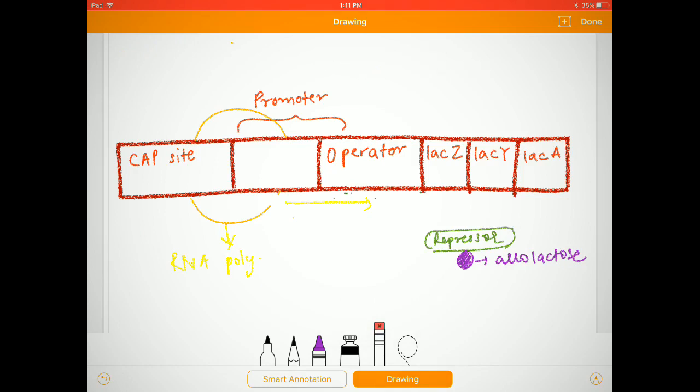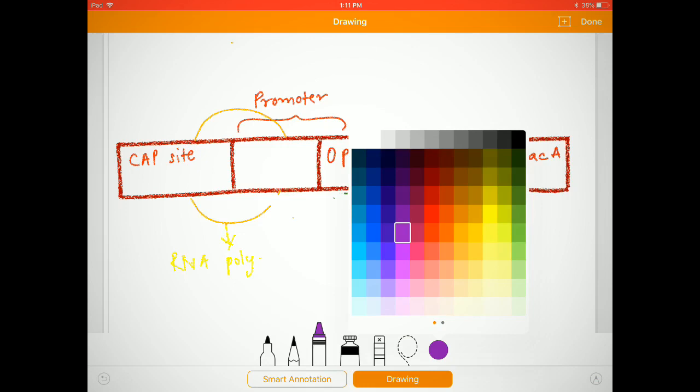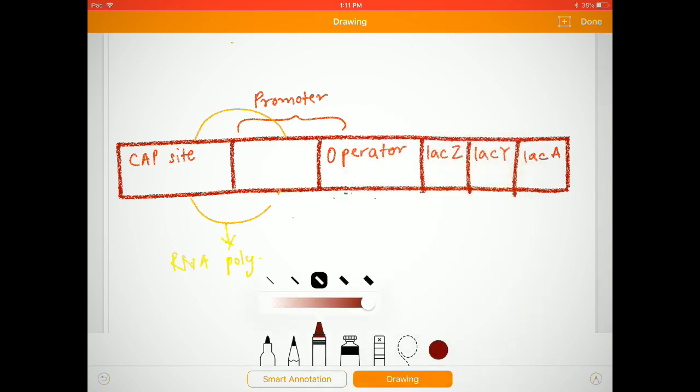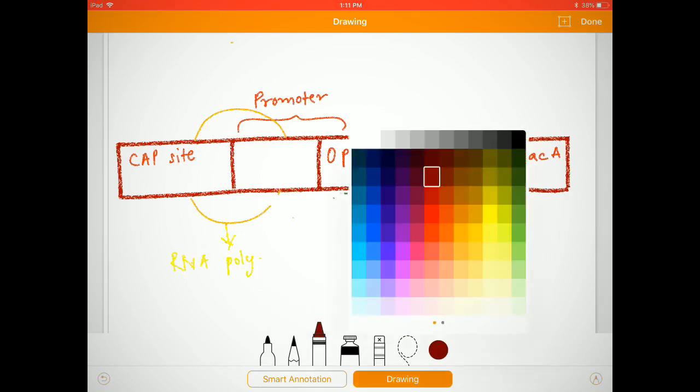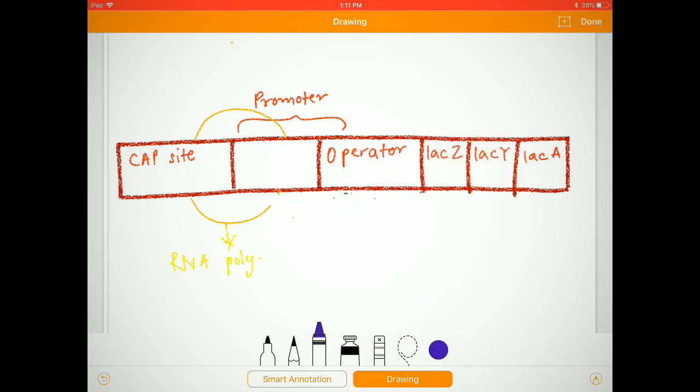Next, if the cell is kept in an environment which is having low glucose level, then what will happen? Here in the cell, the cAMP will be produced. Now, what is cAMP? cAMP is basically cyclic adenosine monophosphate.